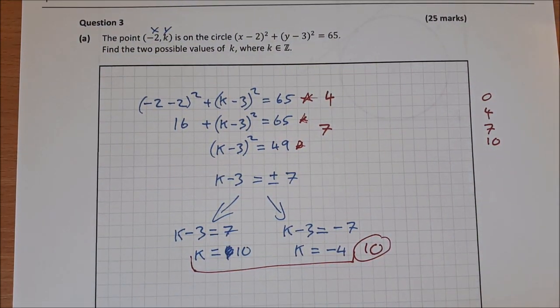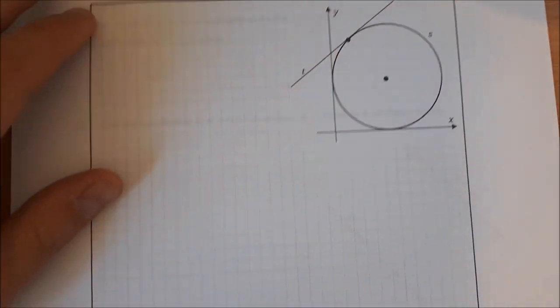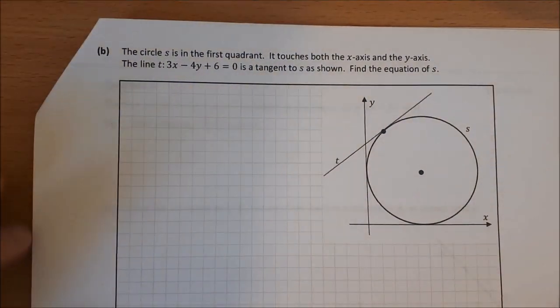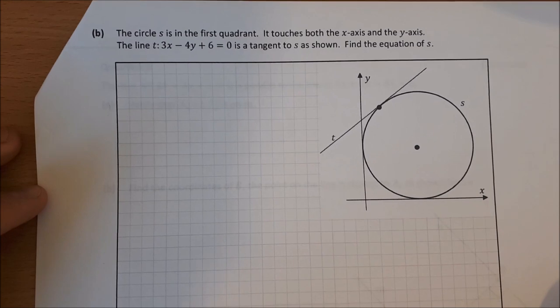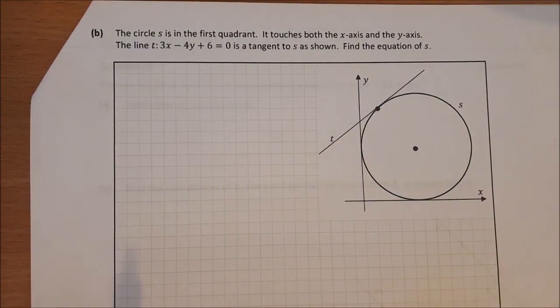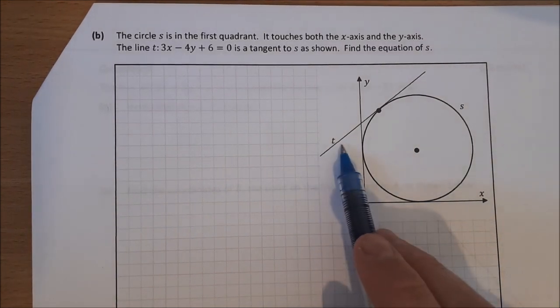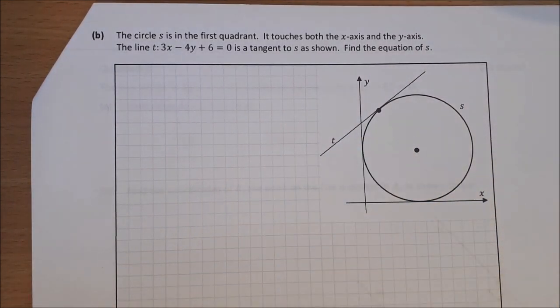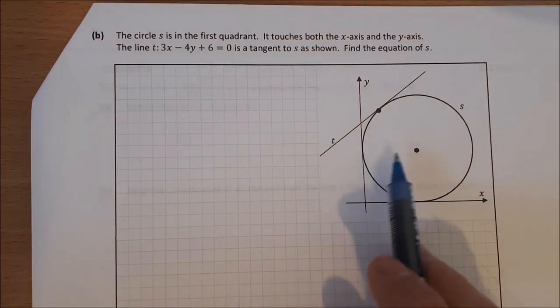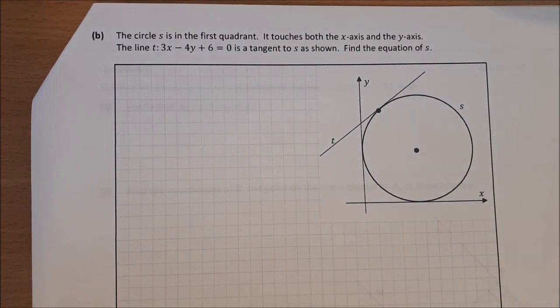Next question: circle S is in the first quadrant, it touches both the x and y axes, and the line t: 3x − 4y + 6 = 0 is tangent to S. Find the equation of S.